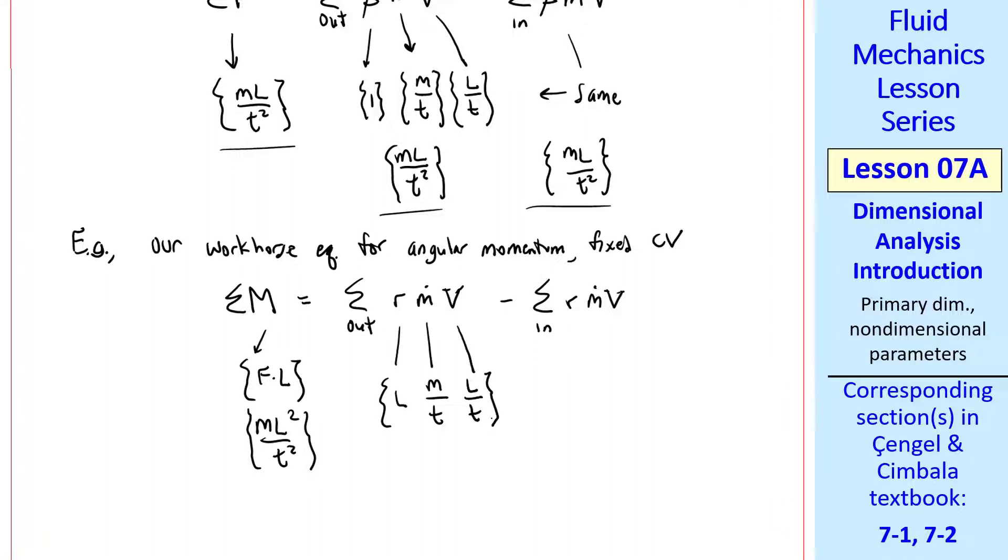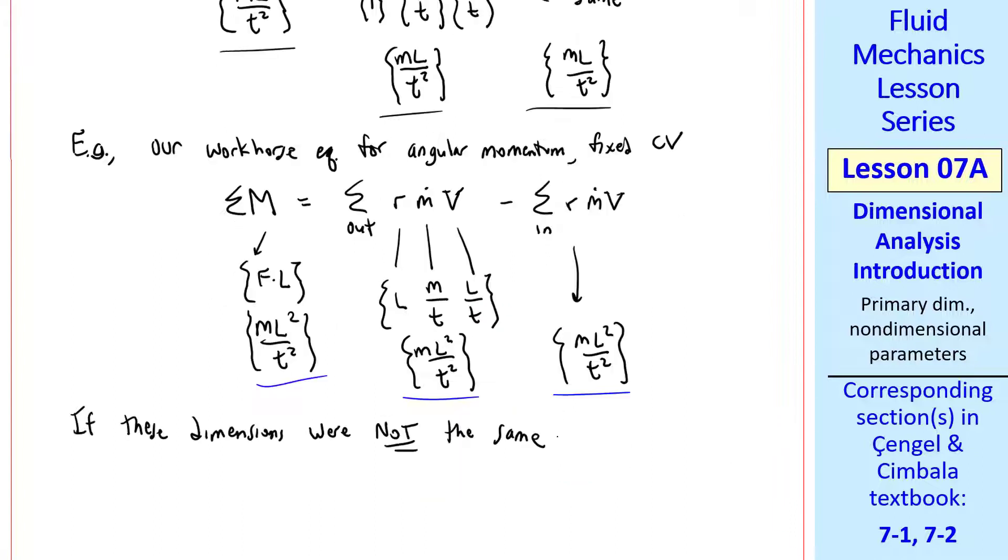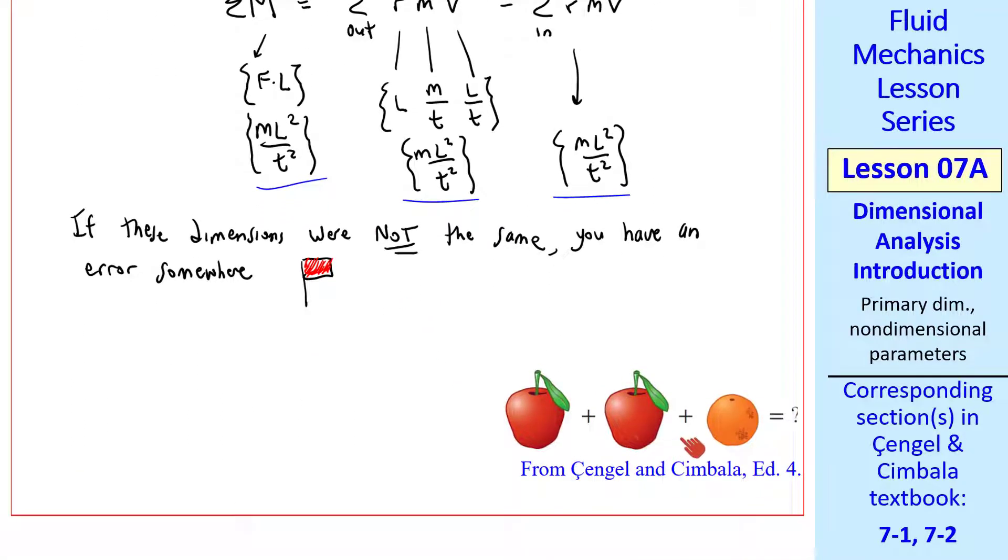Moment has dimensions of force times a moment arm, or length. So this is ML squared over t squared. This gives us L, mass per time, and length per time, which is also ML squared over t squared. The third term has the same dimensions as the second term. Again, since these terms all have the same dimensions, this equation is dimensionally homogeneous. If these dimensions were not the same, you have an error somewhere. This is what we call a red flag. Another way to express dimensional homogeneity is that you can't add apples and oranges.